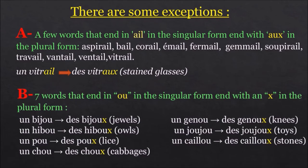Seven words that end in O-U in the singular form end with an X in the plural form. Un bijou, des bijoux. Un hibou, des hiboux. Un pou, des poux. Un chou, des choux. Un genou, des genoux. Un joujou, des joujoux. Un caillou, des cailloux.